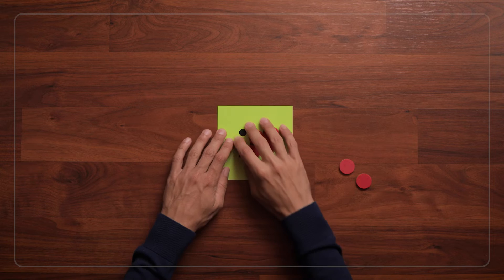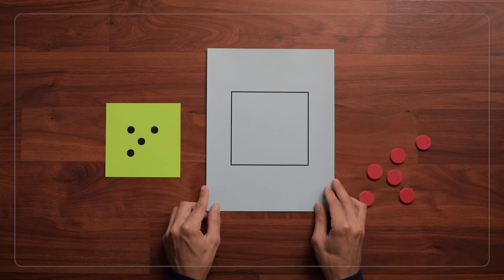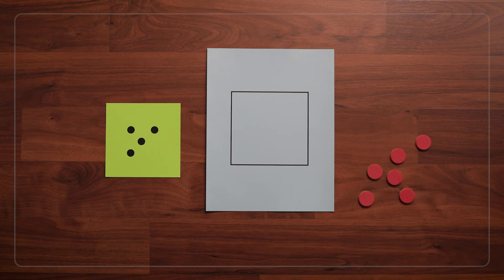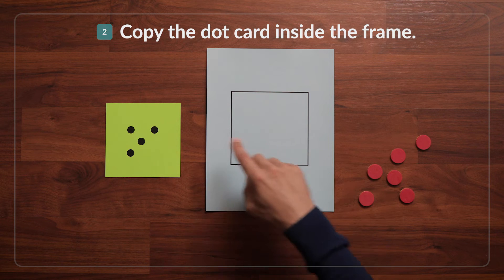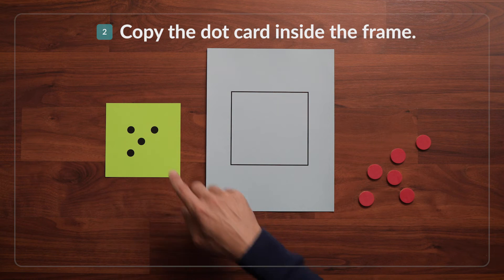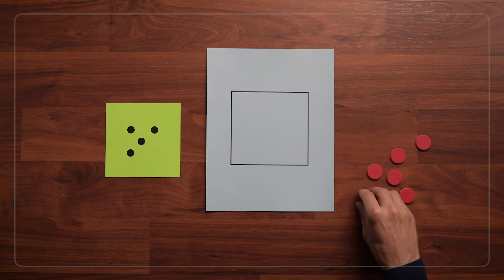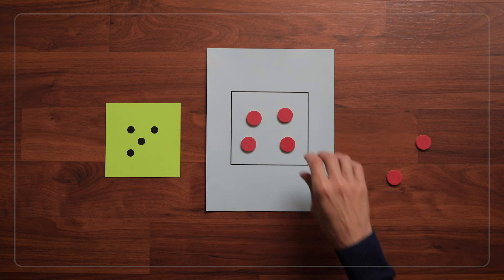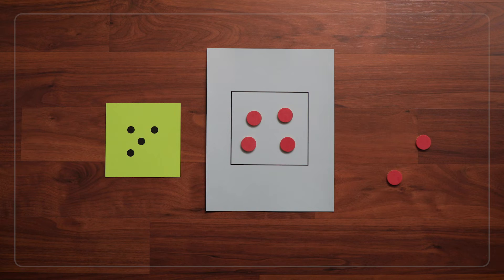Then, once they're ready, you can give each child a blank dot card frame and say, okay, can you arrange your tokens inside this box to make an exact copy of the dot card? At first, kids might just put out the same number of tokens, but not pay attention to the arrangement of the dots.